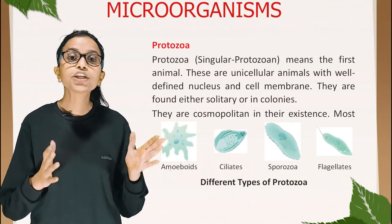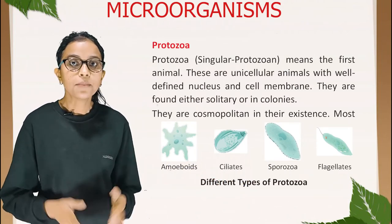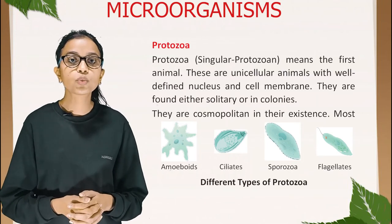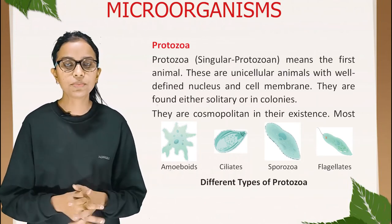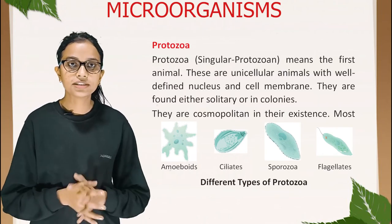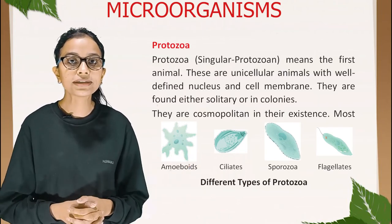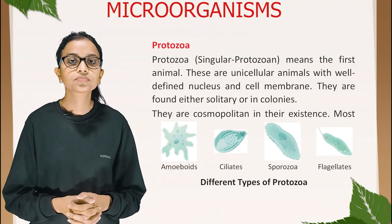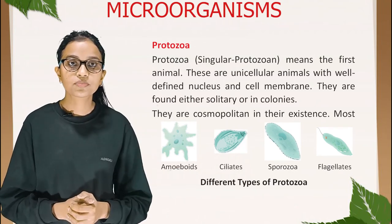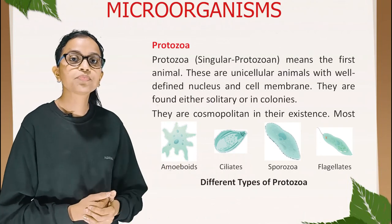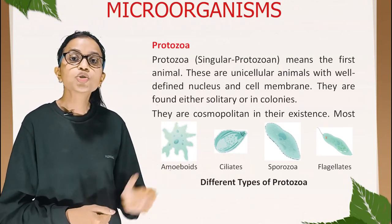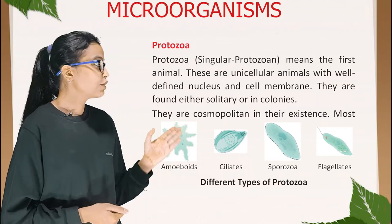Protozoa — singular protozoan — means 'the first animal'. These are unicellular animals with a well-defined nucleus and cell membrane. They are found either solitary or in colonies and are cosmopolitan in their existence. The different types of protozoans are: amoeboids, ciliates, sporozoa, and flagellates.